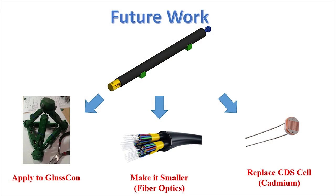Since the foundation and proof of concept of the sensor has been done, improvements can now be made to the design. It could be adapted to use on the Gluscon as shown previously. The footprint of the sensor could be made smaller by the use of fiber optic cable and the replacement for the CDS cell could be found since it has the chemical cadmium in it. There could be many more improvements for the sensor and many applications can benefit by implementing it.